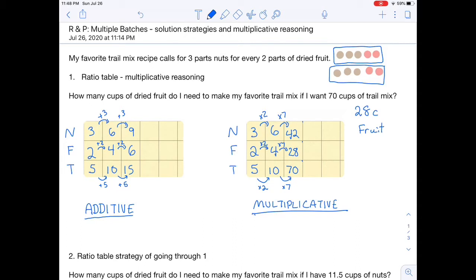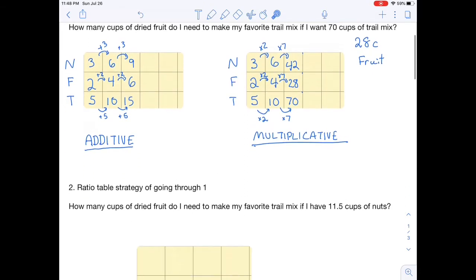A key thing to notice here is that with additive reasoning, we're adding different amounts depending on the original ratio. With multiplicative reasoning, we're multiplying by the same number because that indicates how many groups or how many sets of the original amount I have. Let's look at another problem.